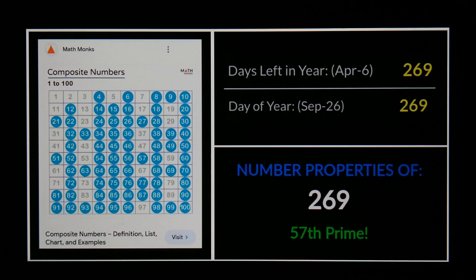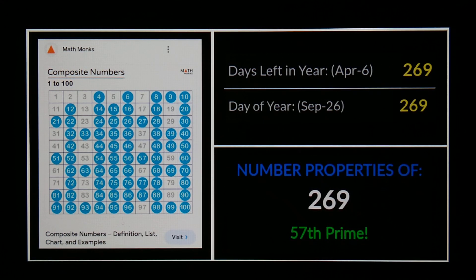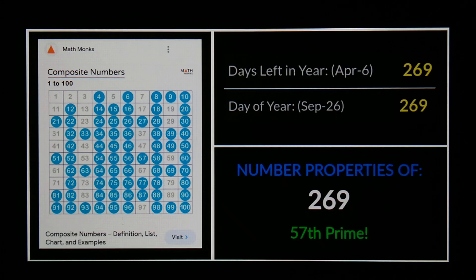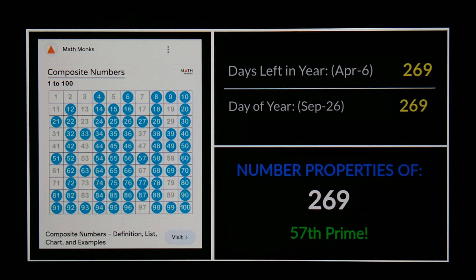I played around a little bit with the numbers and I don't want to make this video too long. It's not something I see people talking about, so I'll just use this example. It stems from the guy's area code: 269 is the 57th prime, and 57 is composite. You can see off to the left I have a composite numbers chart — all the numbers in the blue circles are composite.